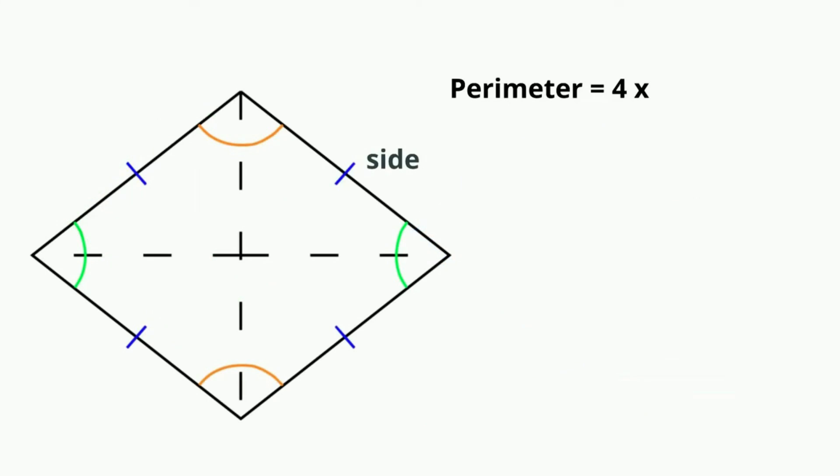If you need to find the perimeter of a rhombus, you can take four times one side, or 4s.